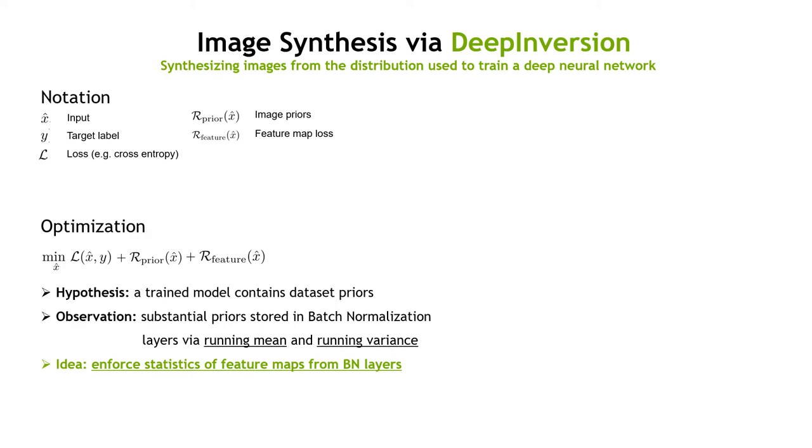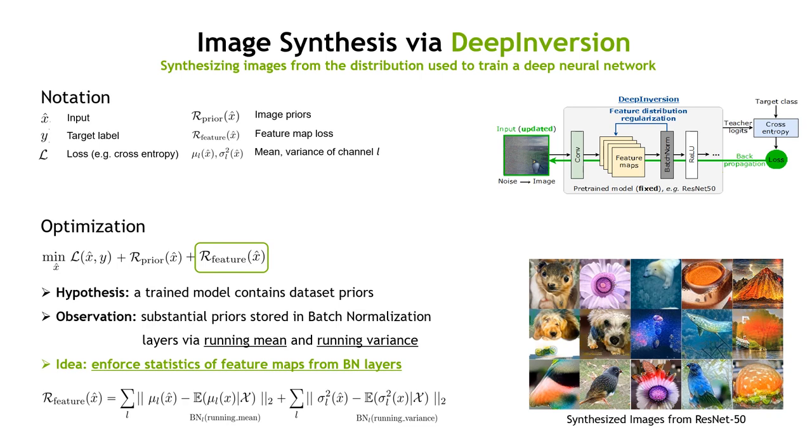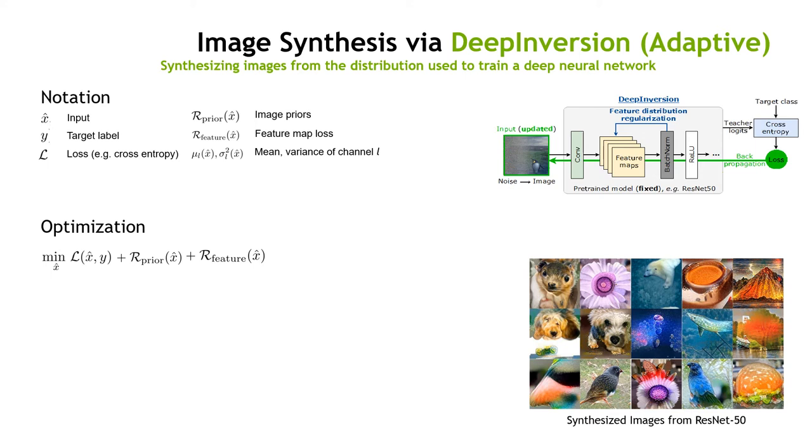Therefore, we introduce a new term called BN feature. The main idea is to enforce that the batch norm statistics are preserved during model inversion. This term substantially improves the quality of the generated images.